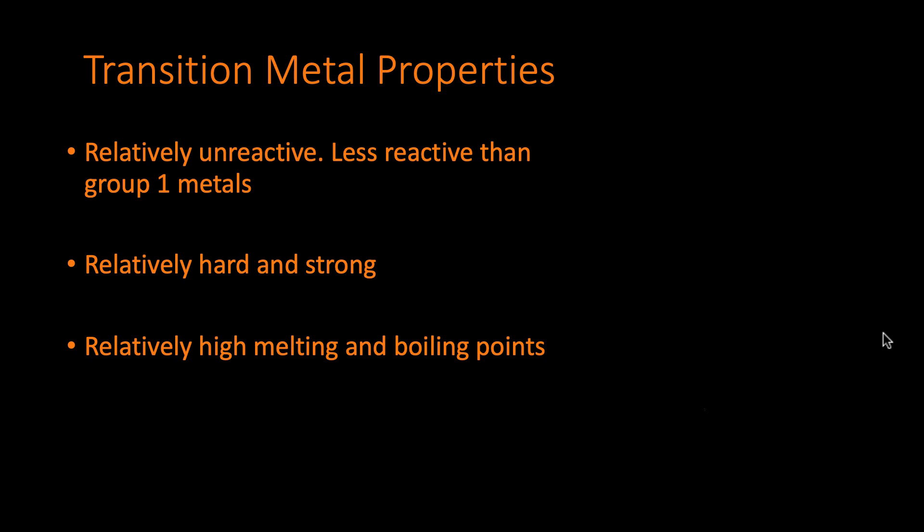The group one metals are crazy reactive. All the transition metals are not as reactive. In general they're relatively hard and strong as well. Group one metals actually are not, they're pretty soft. The transition metals typically are relatively hard and they are relatively strong. And also they have relatively high melting and high boiling points.